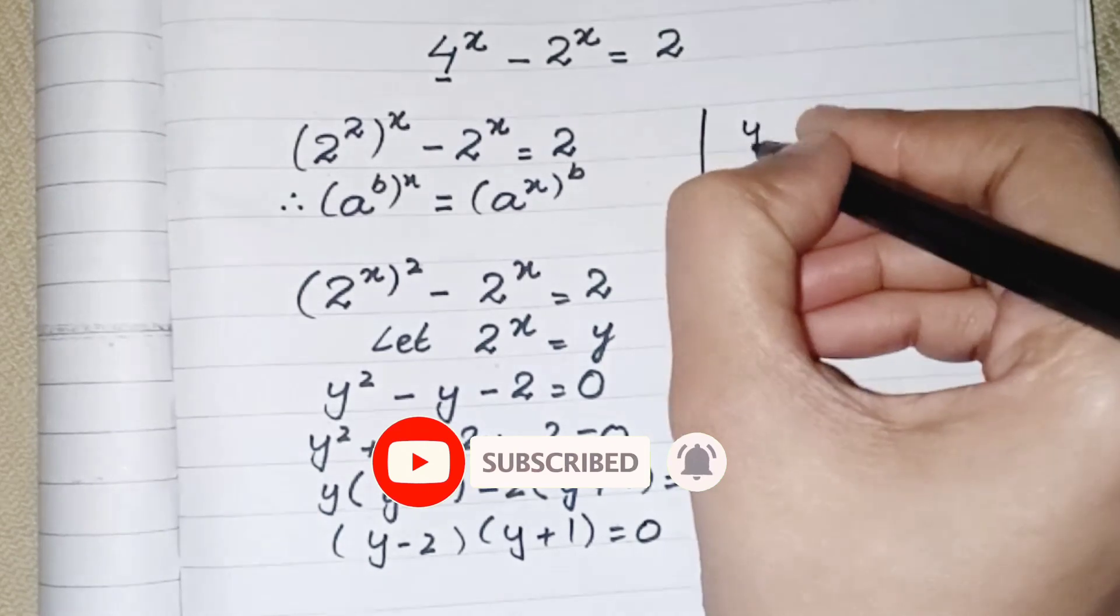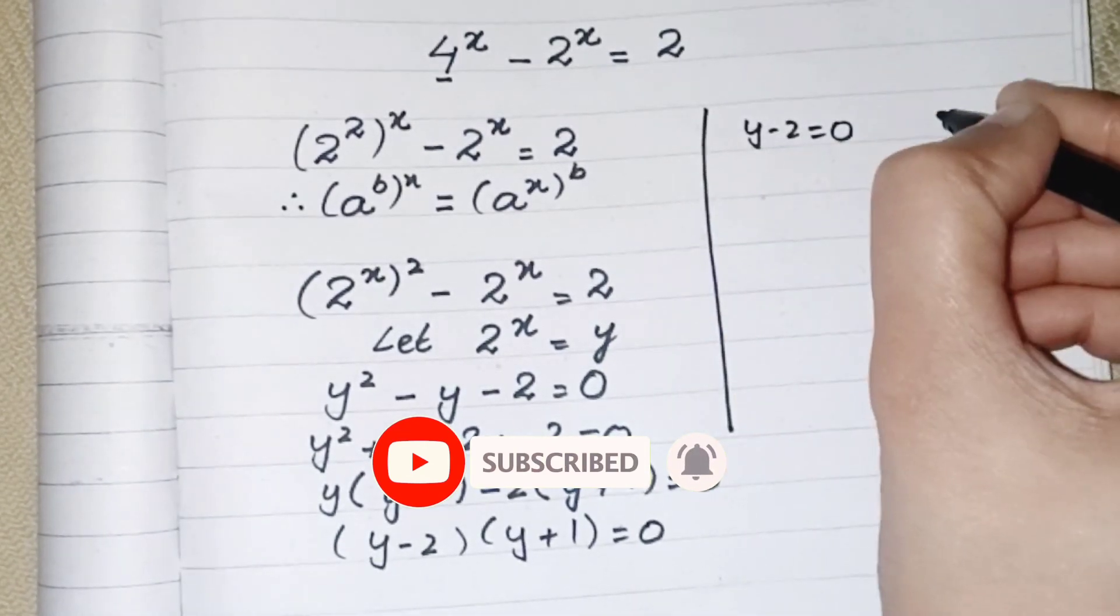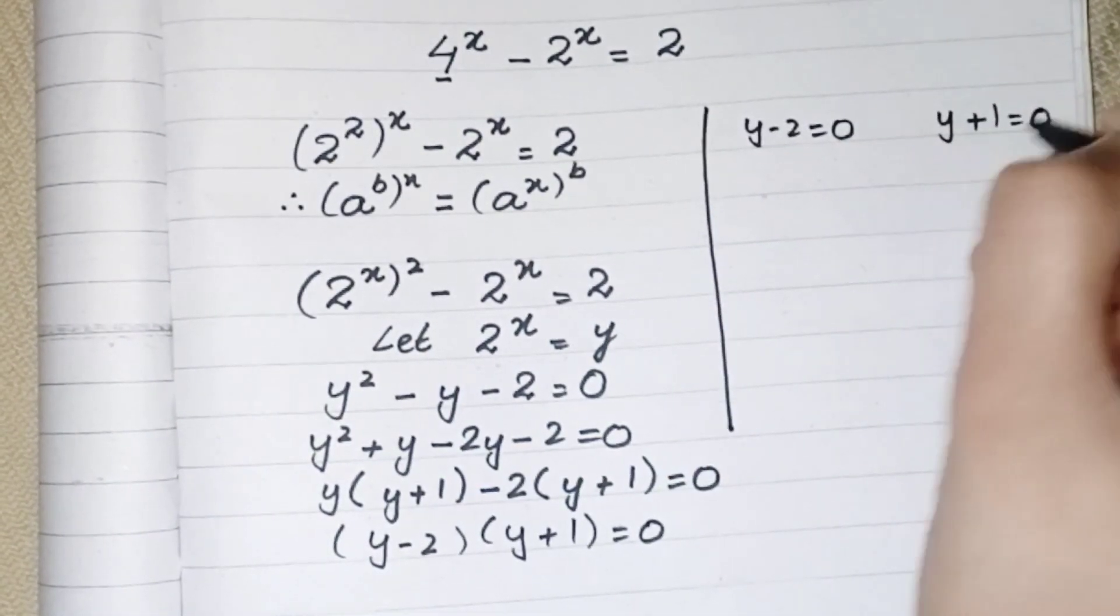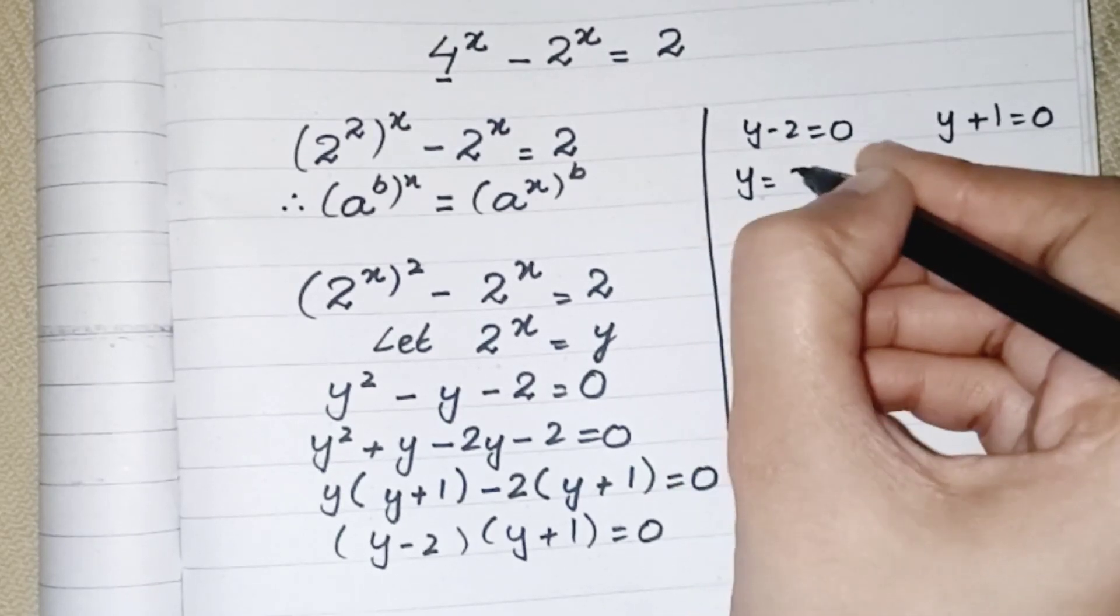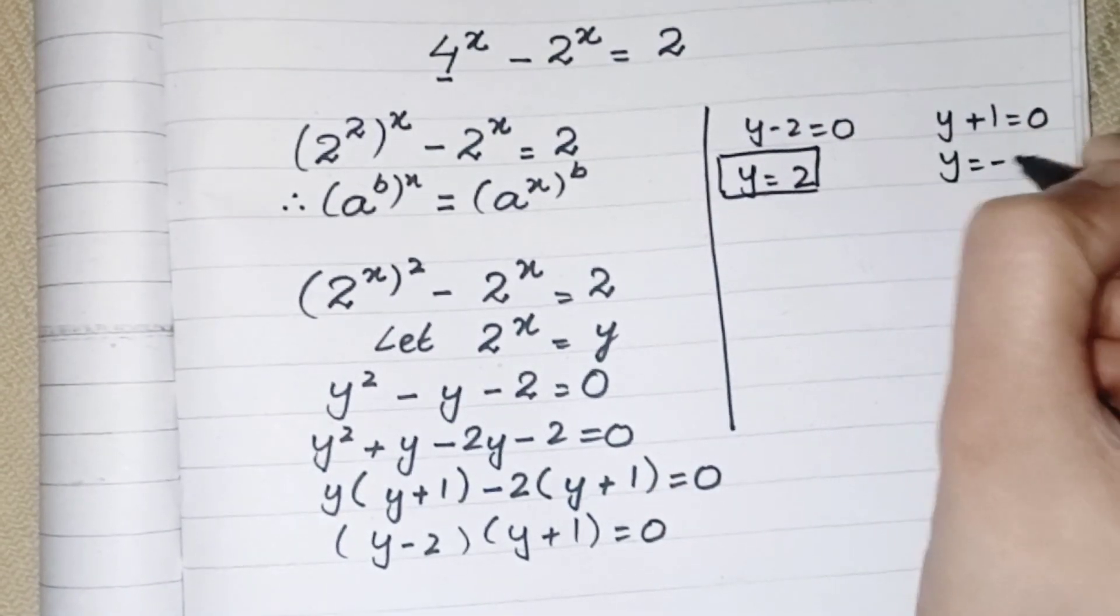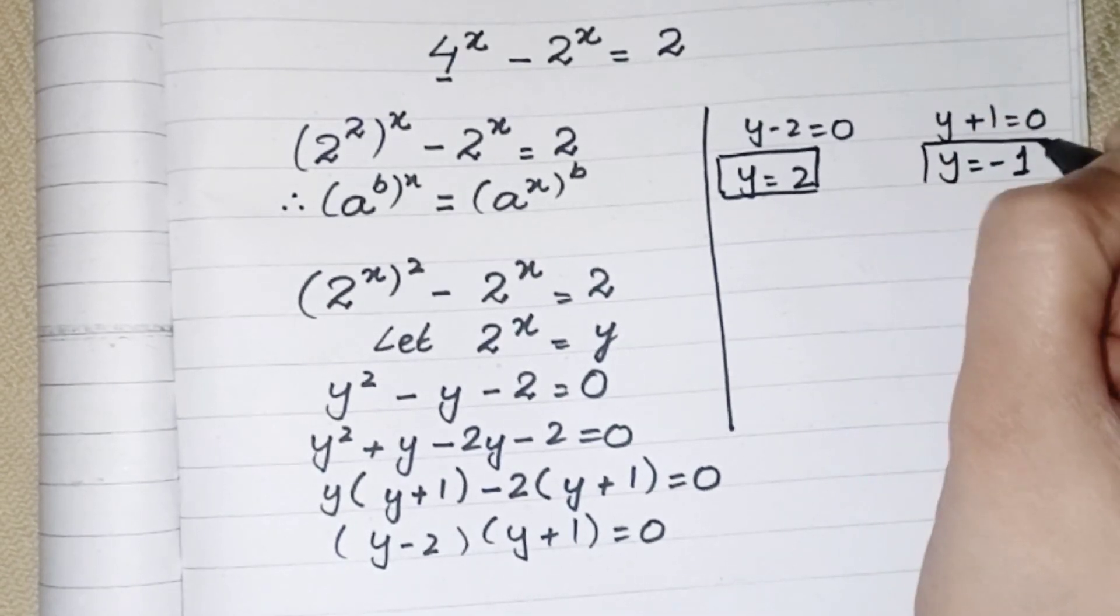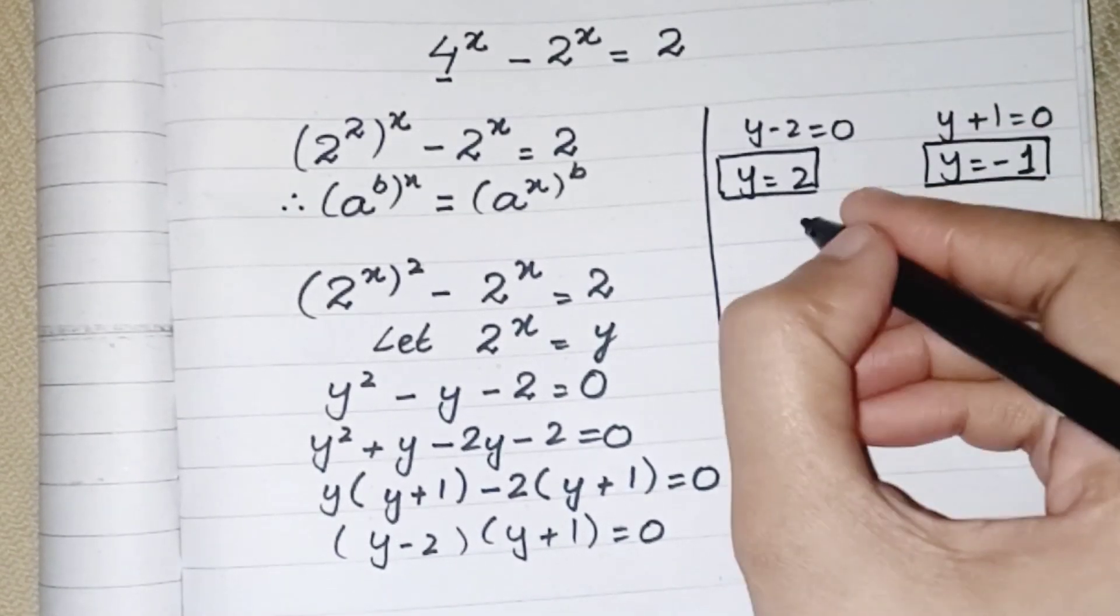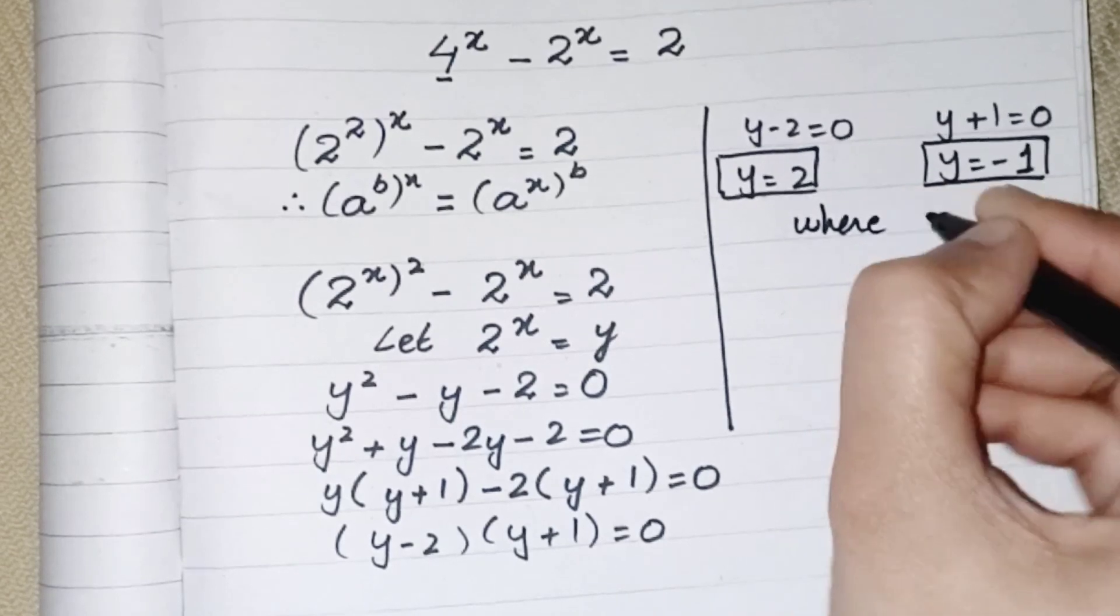Now to get the value of y, we have to move the constant to the other side, and the values of y are 2 and minus 1, where y is a substitute variable. The actual value of y is 2^x.